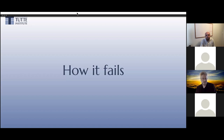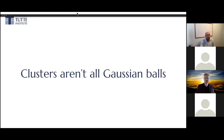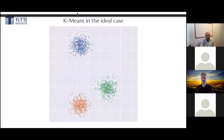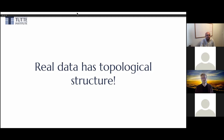How does K-Means fail? We spent a few minutes talking about why it was good. Now let's talk about the problems of the algorithm, which will lead us toward algorithms more conducive to topological data analysis. First off, clusters are rarely large spherical blobs — even high-dimensional spherical blobs floating in some ambient space. This is the Gaussian ball assumption underneath K-Means, which gets used in all of the theoretical statistical proofs. In practice, real data has topological structure.